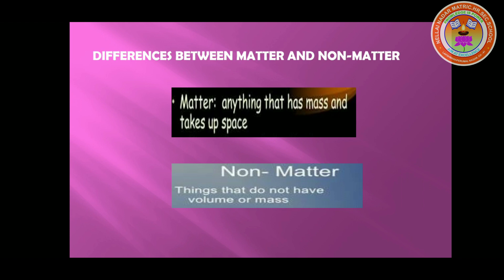Next, what is the difference between matter and non-matter? Now you know: matter means anything that has mass and occupies space is called matter, and non-matter means a thing that does not have mass and does not occupy space is called non-matter.